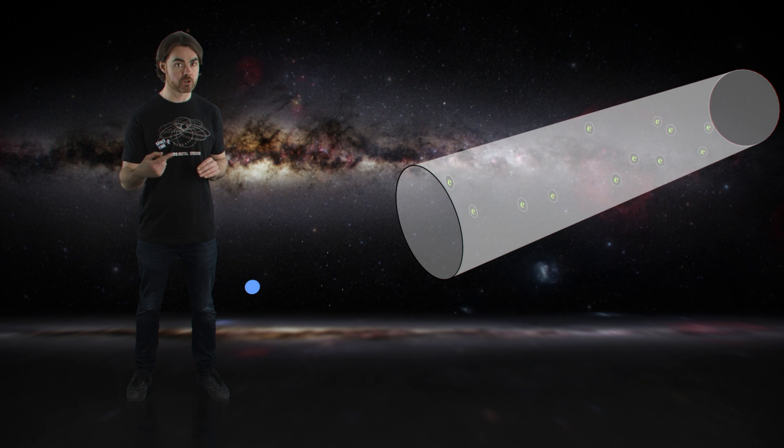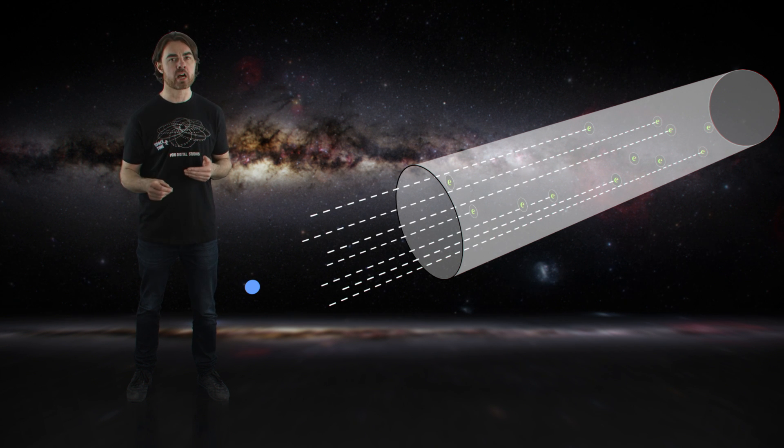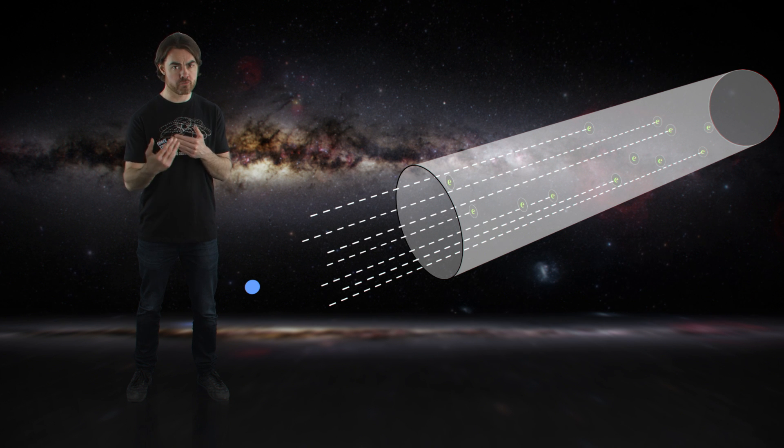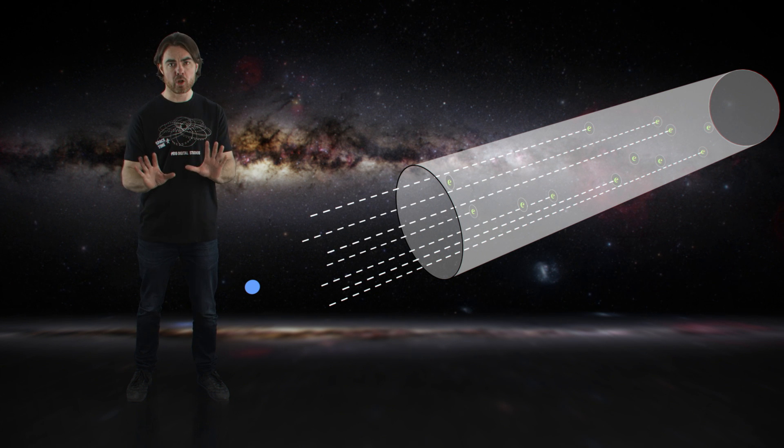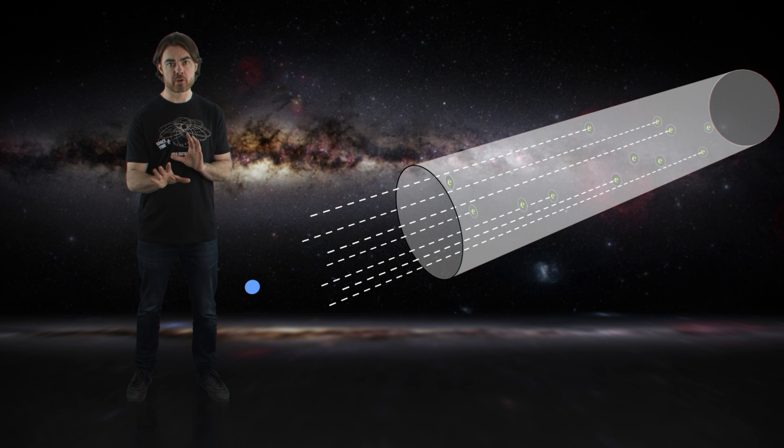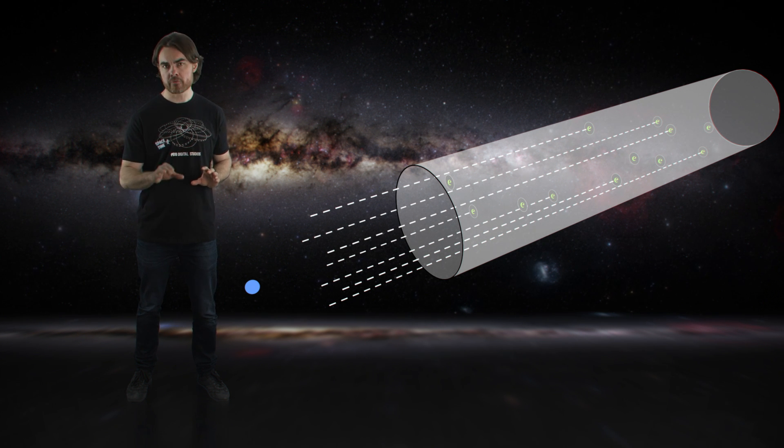And the further ahead the photon looks, the more of its possible paths are blocked by these targets. There's a distance forward at which the photon's view ahead is completely blocked. Any photon traveling that distance is probably going to have hit an electron. That distance is called the mean free path.